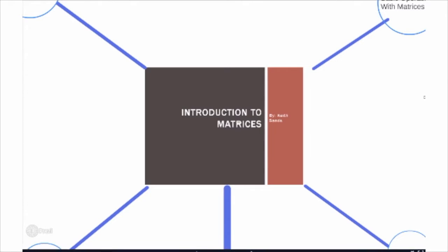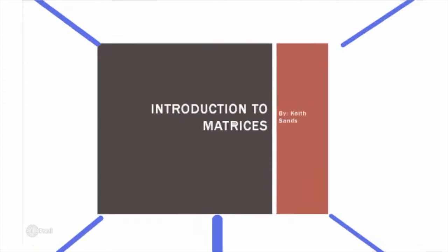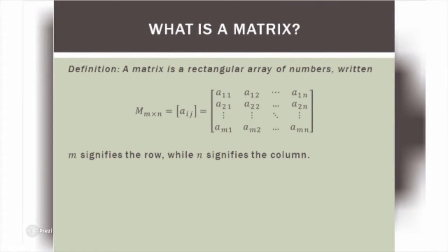This is Introduction to Matrices — the beginning of Stacey Rodman's Chapter 3 of her Linear Algebra text. A matrix is a rectangular array of numbers with m rows and n columns. For example, the entry A sub 2,1 is the entry in the second row and first column.